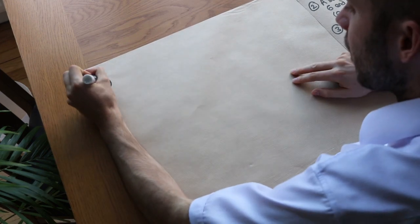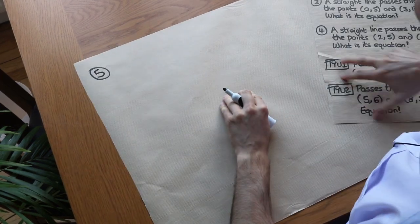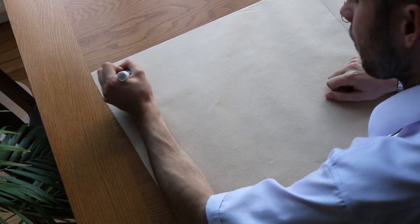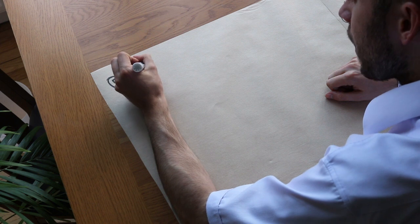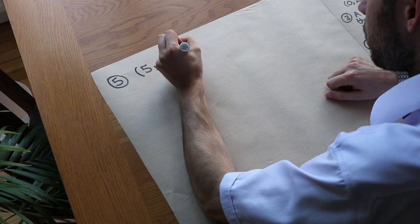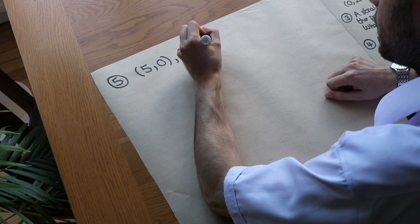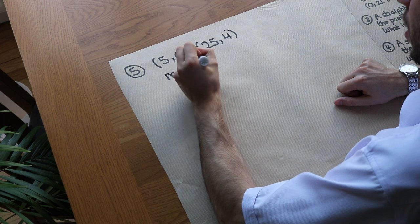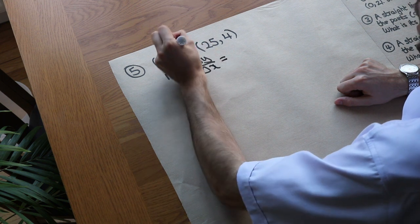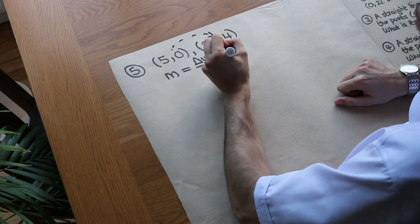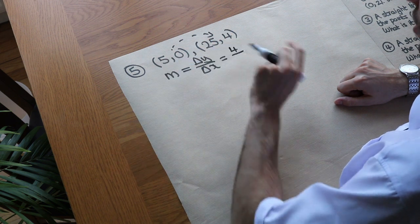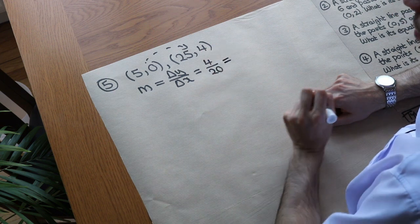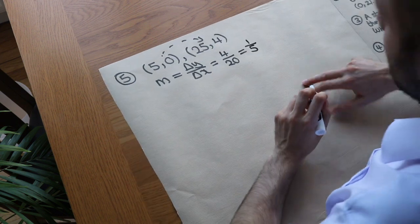Let me do one extra example before the test your understanding questions, because that was a bit harder. Let's say the line goes through the points 5, 0 and 25, 4. We start by working out the gradient: change in y over change in x. The change in y from 0 to 4 is 4, and the change in x from 5 to 25 is 20. So m equals 4 over 20, which simplifies to one fifth.